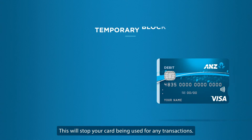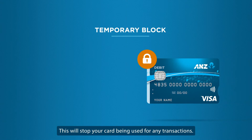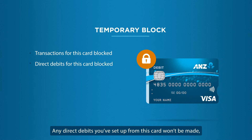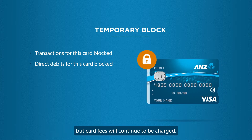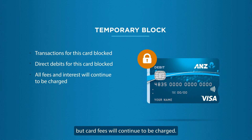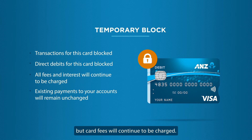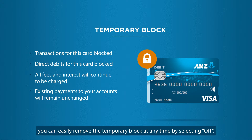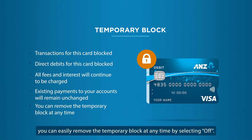This will stop your card being used for any transactions. Any direct debits you've set up from this card won't be made, but card fees will continue to be charged. If you find your card, you can easily remove the temporary block at any time by selecting Off.